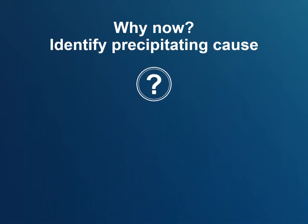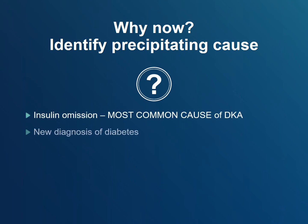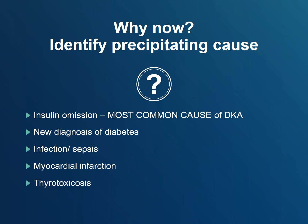Finally, ask why has this happened now? Most often, DKA is the first presentation of type 1 diabetes, or occurs in those who already have type 1 diabetes but omit insulin. But other physiologic stressors can lead to DKA, such as infections, myocardial infarction, thyrotoxicosis, drugs and intoxication. Do not miss these severe but treatable conditions that may underlie DKA.